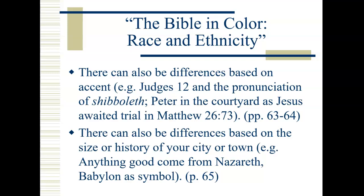There can also be differences based on the size or history of a city or town. Nathaniel says, 'Does anything good come from Nazareth?' because Nazareth is a small village with nothing significant about it. Similarly, Babylon is a symbol — after Rome destroyed the temple, Jewish literature began thinking of Rome as Babylon, and even in New Testament texts, Babylon is used as a symbol for Rome because of what Babylon had done, with Rome essentially doing the same thing.